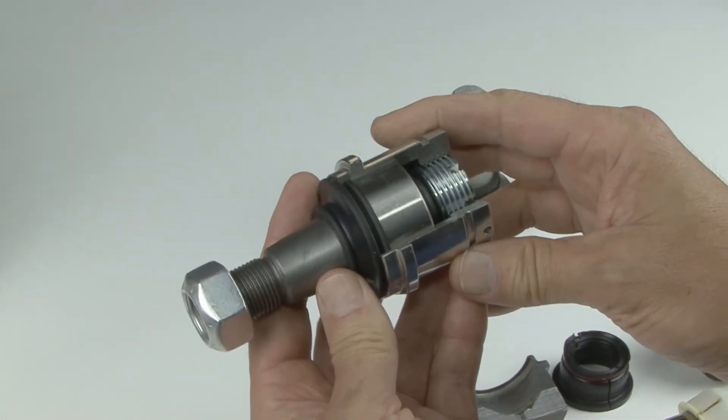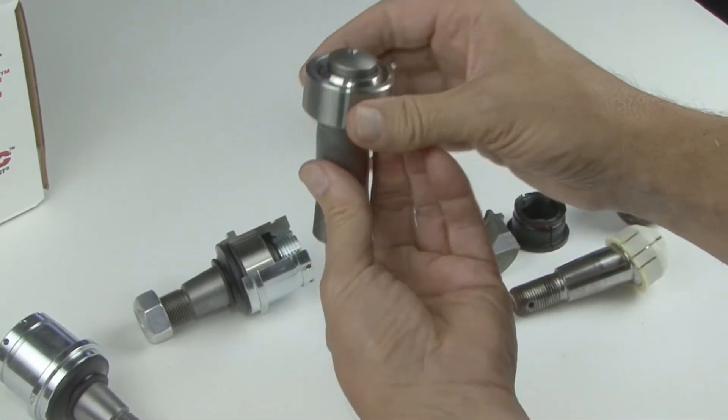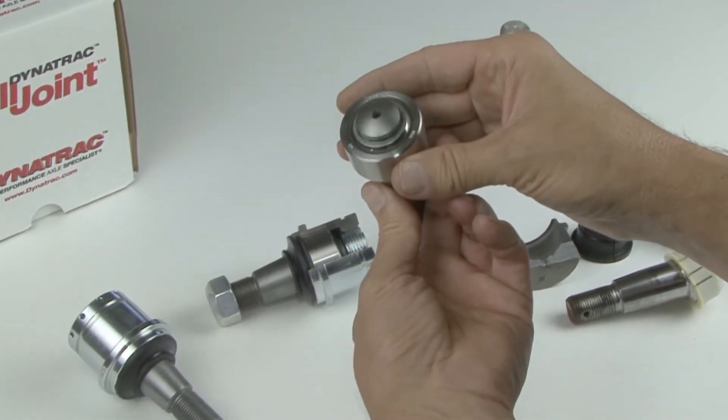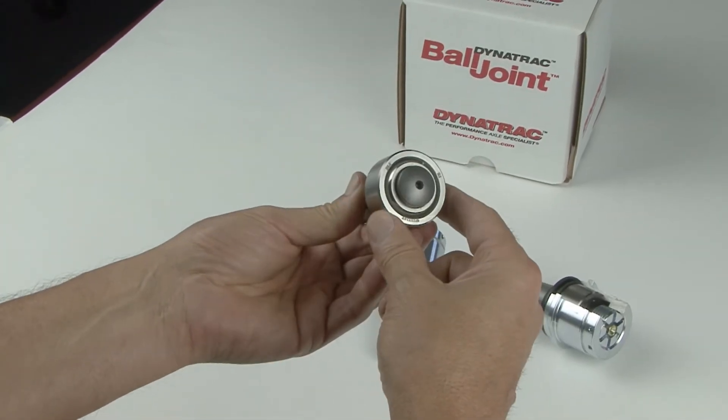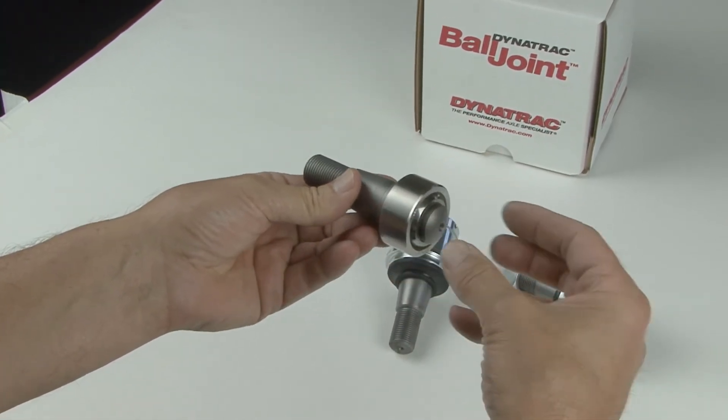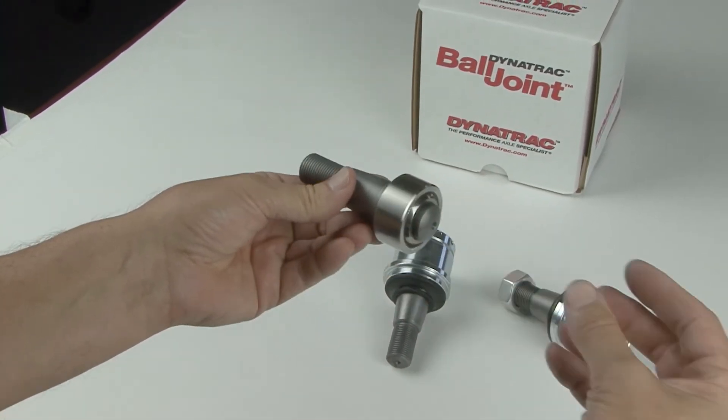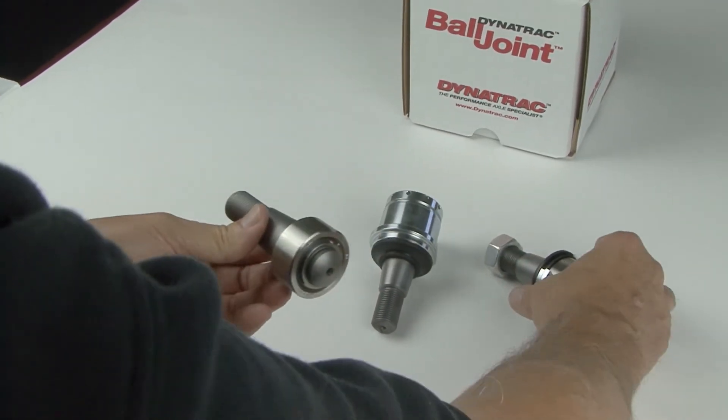The heart of the Dynatrac ball joint is the heat treated chromoly stem and the hardened stainless spherical bearing. The spherical bearing is just pressed on here lightly. It can be removed and a new one can be put in its place. The whole assembly can be removed from the housing in this direction.